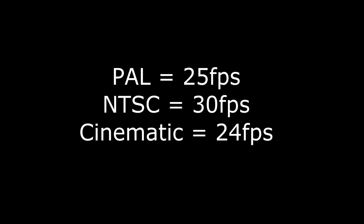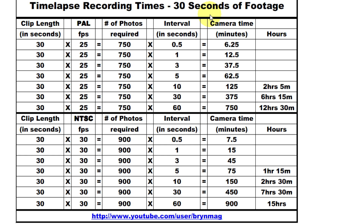After that, it's just basic maths. I have compiled this reference chart to help calculate how long it takes to create a timelapse for intervals between half a second and 60 seconds. This column is for PAL users and down below is for NTSC. This will give you the number of photos that will be required. You can then multiply that by your required interval to arrive at your camera time. So at 25 frames per second, a 1 second interval will require 12 and a half minutes of camera time to achieve a 30 second video clip.